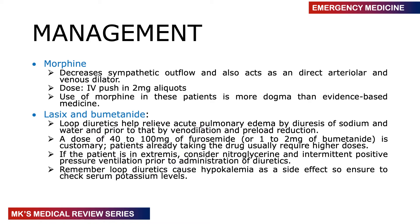Start with a dose of 40 to 100 mg of furosemide or 1 to 2 mg of bumetanide. Patients already on diuretics are usually resistant to lower doses, so you may need to go higher. If the patient is in extremis, consider nitroglycerin and intermittent positive pressure ventilation before administering diuretics. Remember that loop diuretics carry a risk of hypokalemia, so monitor potassium levels.